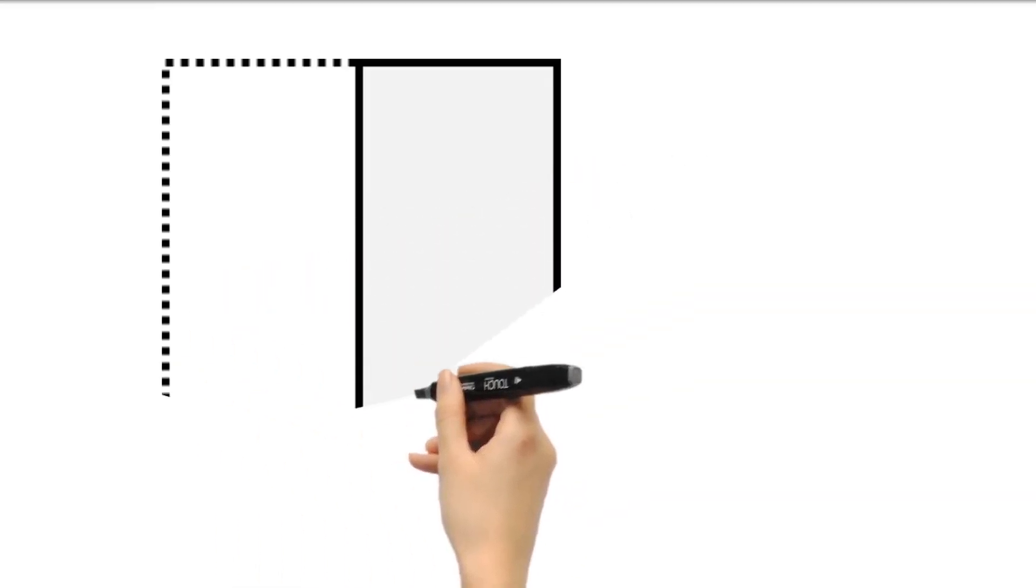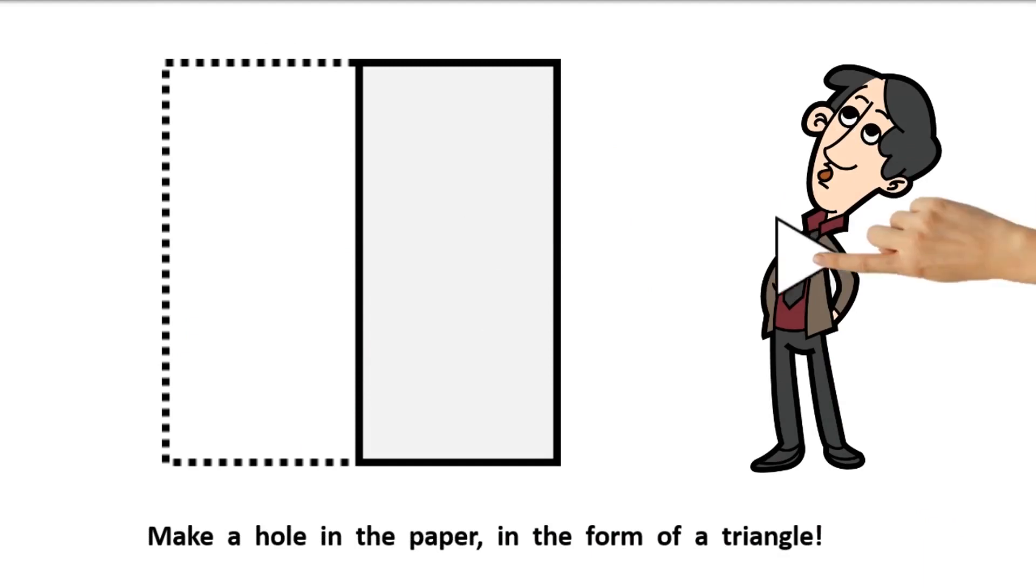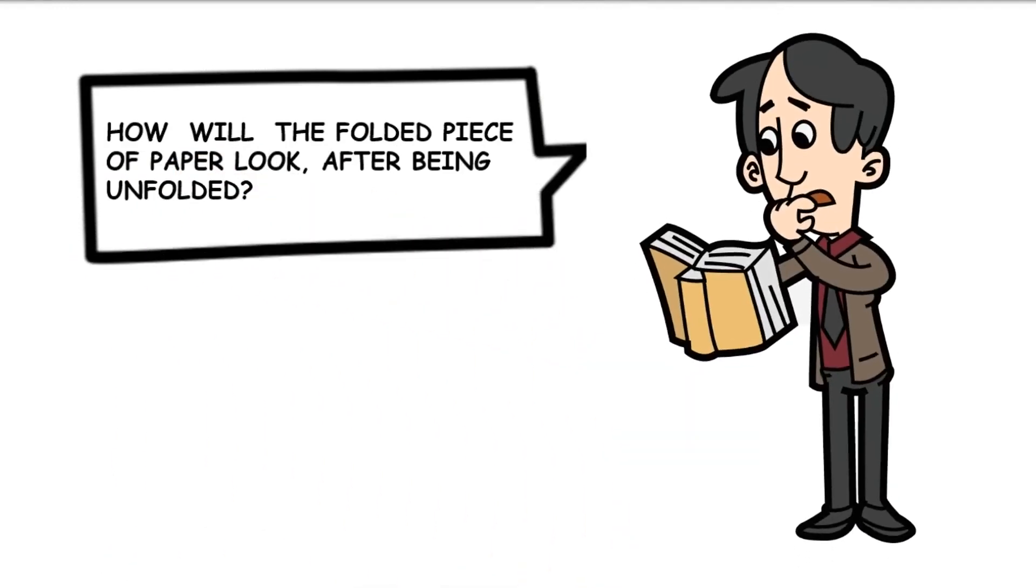Make a hole in the paper, in the form of a triangle, pointing right. How will the folded piece of paper look after being unfolded?